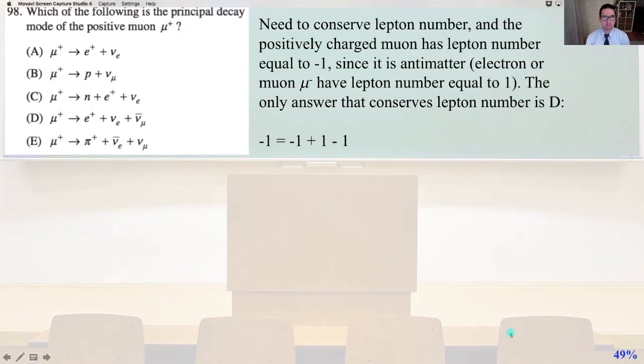Number 98, which of the following is the principal decay mode of the positive muon? So we know we need to conserve the lepton number, and the positively charged muon has a lepton number equal to minus 1 since it is antimatter. So the electron or the muon, the regular electron or the regular muon have a lepton number equal to 1. So notice the sign difference for the regular muon versus the antimatter muon.